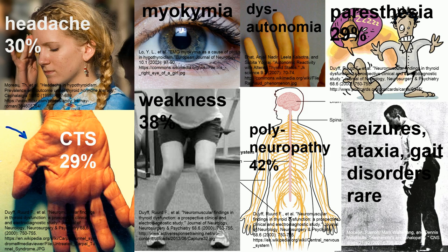Carpal tunnel syndrome — the median nerve in the wrist — is very common in Hashimoto's thyroiditis. Weakness affects the proximal muscles closer to the center of the body. Polyneuropathy affects the distal nerves. And rarely there can be seizures and movement disorders — involuntary movements. Even sometimes tremors can occur in Hashimoto's thyroiditis, and this is when antibodies affect the central nervous system.